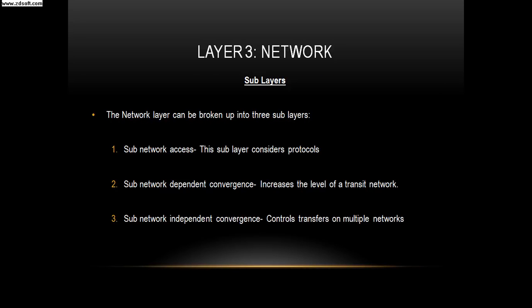The network layer can be broken down into three sublayers: sub-network access, sub-network dependent convergence, and sub-network independent convergence. Sub-network access considers protocols that deal with the interface of the network. Sub-network dependent convergence brings a transit network up to the level of a different network on another side. Sub-network independent convergence handles transfers across multiple networks.